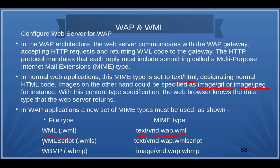For WML Script, the MIME type should be text/vnd.wap.wmlscript. For BMP images used in WAP, the MIME type should be image/vnd.wap.wbmp.